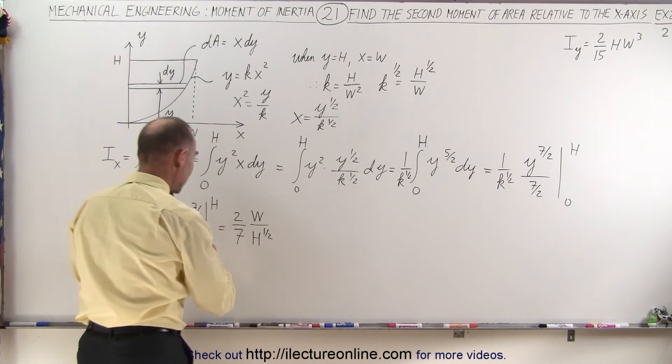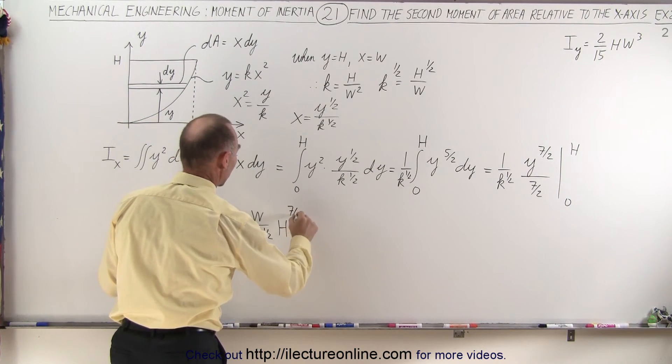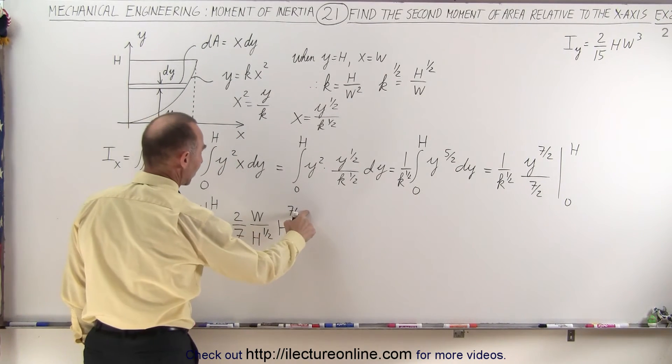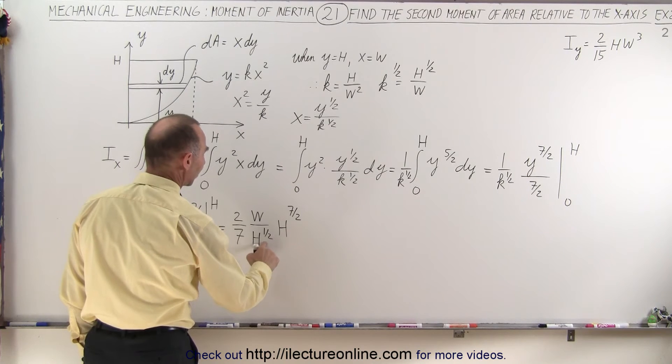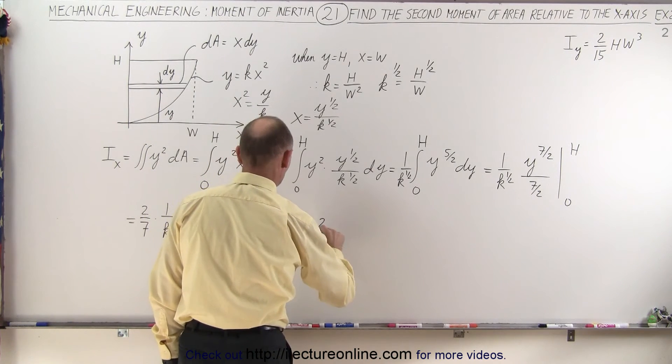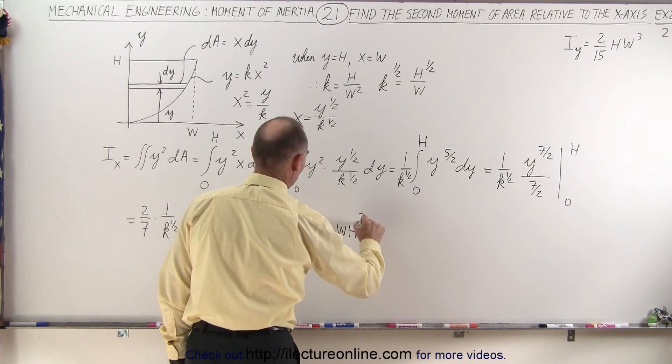So this becomes h, when we substitute in the h, h to the seven-half power. Now we have h to the seven-half divided by h to the one-half, so we subtract the one-half from that. So this gives us 2 sevenths times w h to the third power.